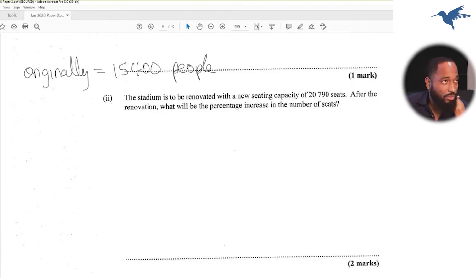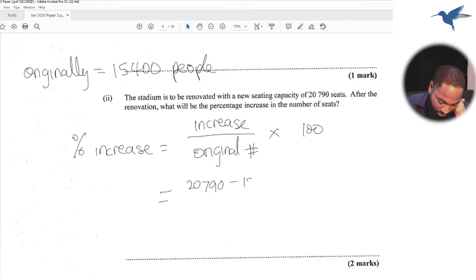And it's a percentage increase question, so that's a consumer arithmetic technique. To find the percentage increase, you need to find how much increase there was, put it over the original value, multiply by 100. So the increase was 20,790 minus the original 15,400, divided by the original 15,400, and multiply that by 100.